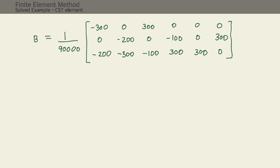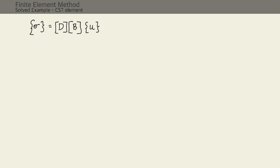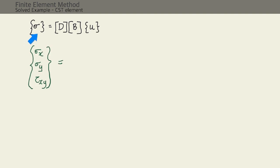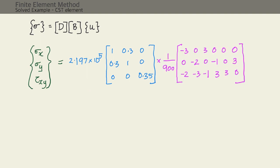Substituting all values, we obtain and simplify the B matrix (the strain-displacement matrix). We can now calculate the stress components. With the D matrix and B matrix calculated, and u given in the question, we substitute these into sigma = D·B·u. Expanding: sigma = [sigma x, sigma y, tau xy]ᵀ = D·B·u.